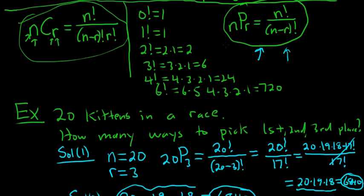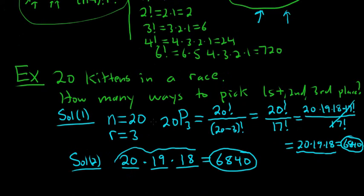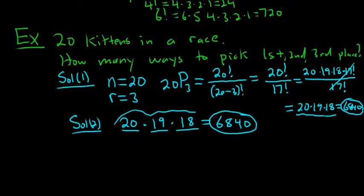You do the same thing we did here with the kittens, except you do it with n objects, and you're picking r of them with regard to order. So whenever you have a permutations problem, you can always use the multiplication rule instead.